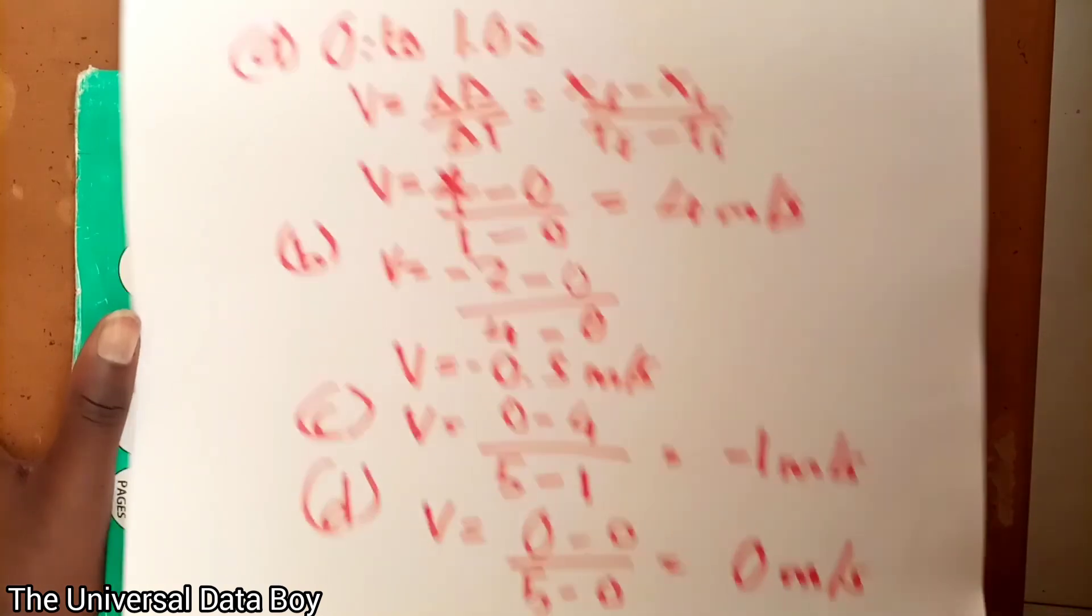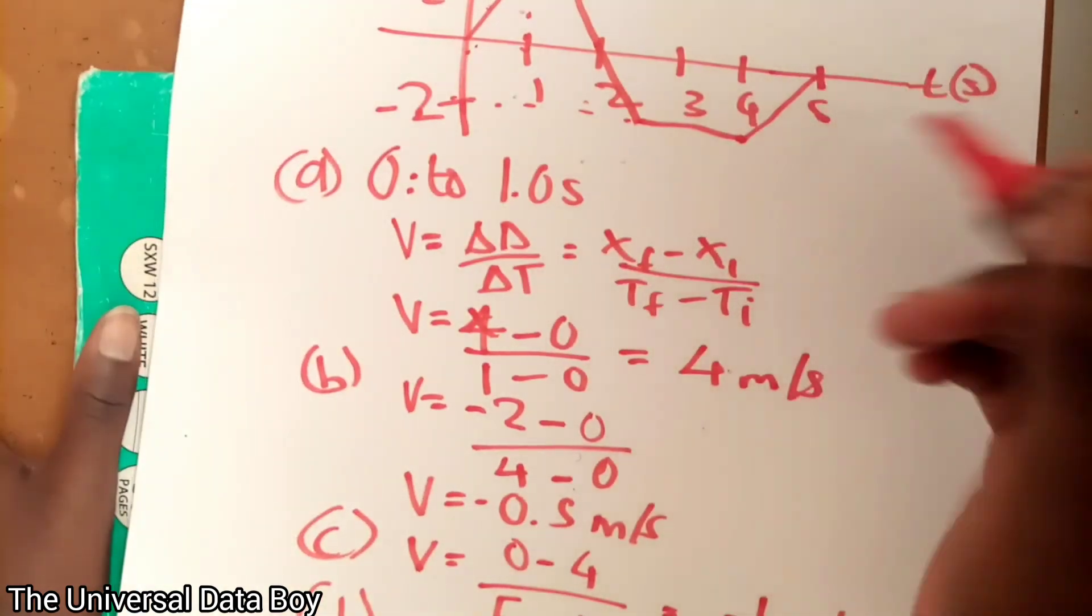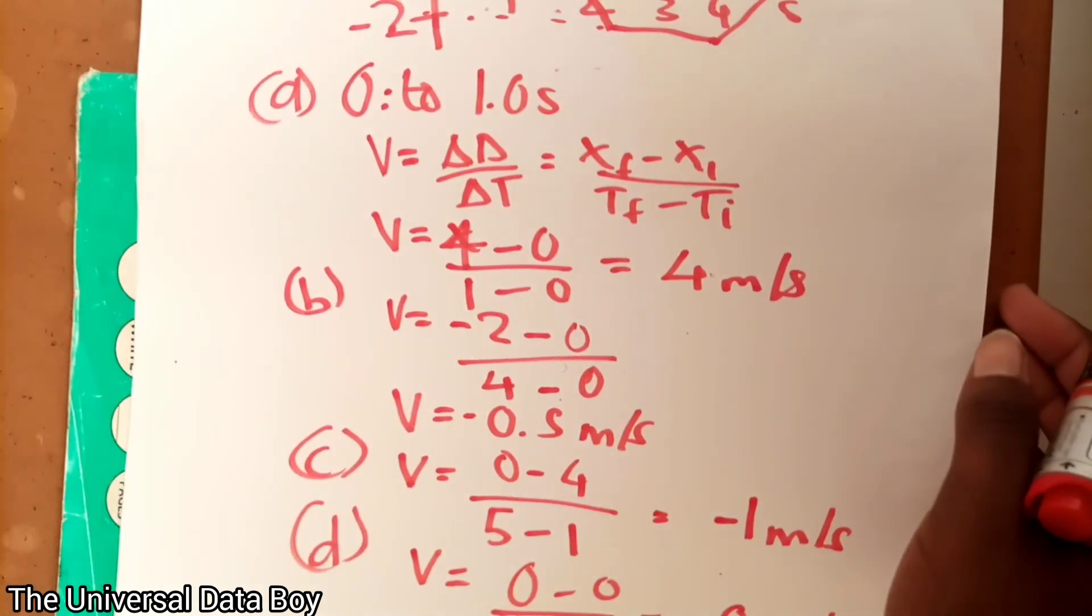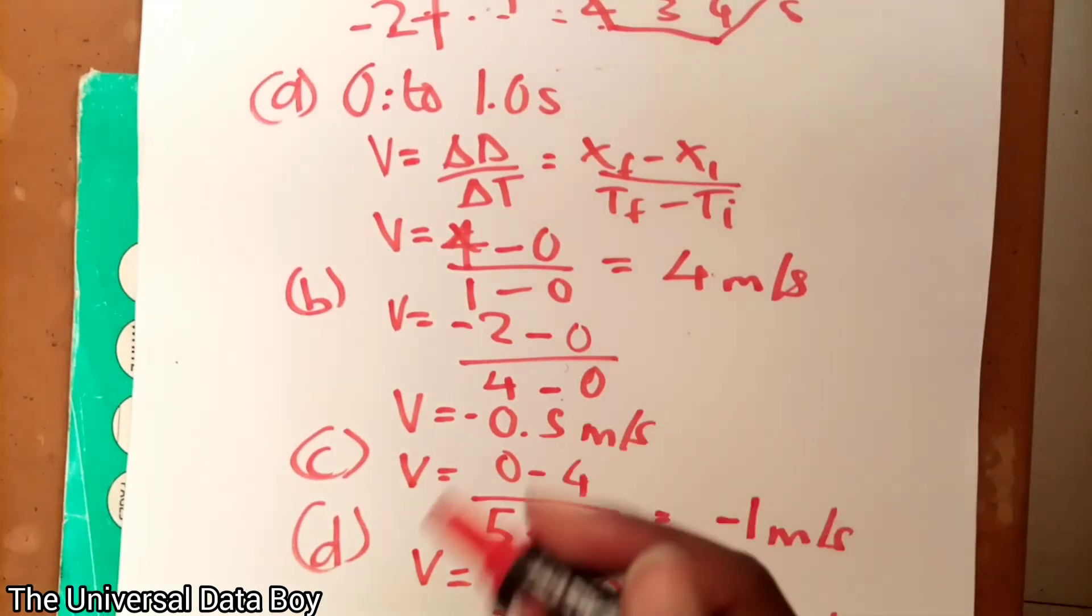This is the average velocity, not the velocity at 5 but the average velocity. And so that's how you can go about this question. We go on to question 3